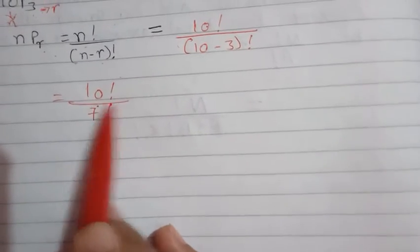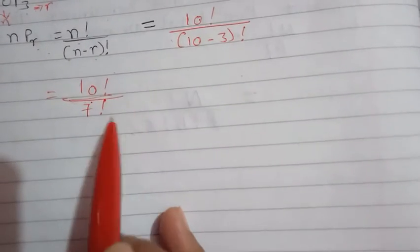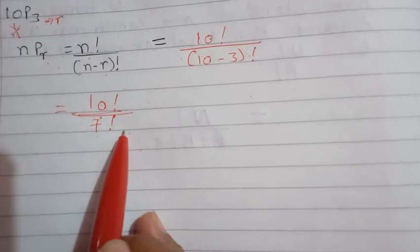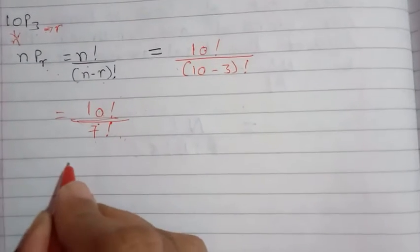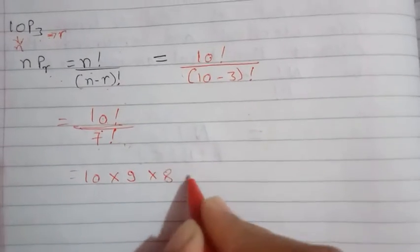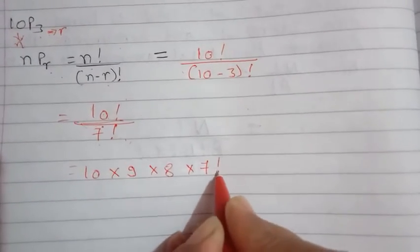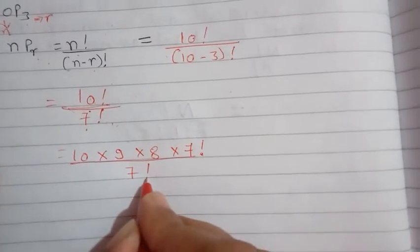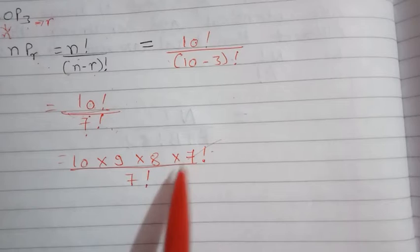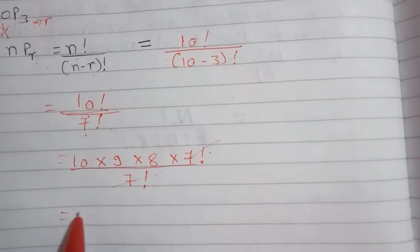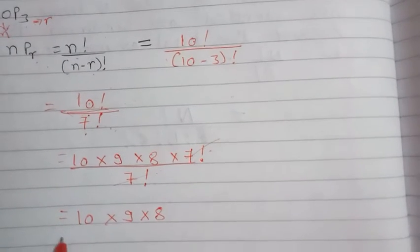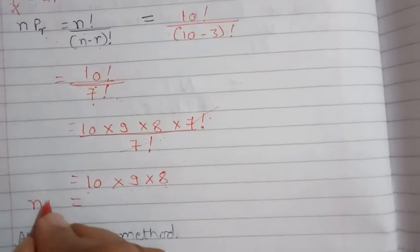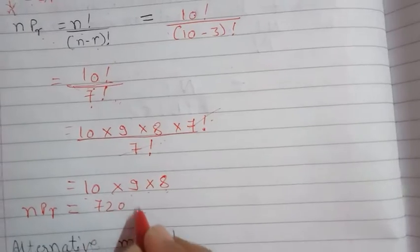I'll expand the numerator down to 7, because 7 factorial in the denominator will cancel. So 10 into 9 into 8 into 7 factorial, upon 7 factorial. The 7 factorials cancel, leaving 10 multiplied by 9 multiplied by 8. That is 72 into 10, which equals 720. So the answer for 10P3 is 720.